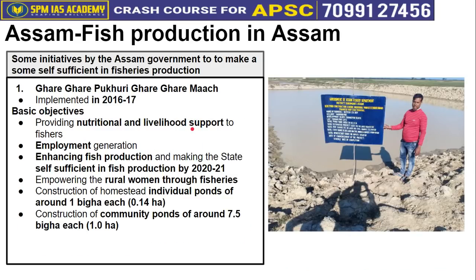Now let's look at some initiatives taken by the Government of Assam to make Assam self-sufficient in fishery production. One important scheme in this direction is 'Ghare Ghare Pukhuri, Ghare Ghare Mach' — meaning every household should have a pond and every household should produce fish. This scheme started in 2016-17, with the purpose of providing nutritional and livelihood support. When fish is available at home, nutritional security is ensured, livelihood and employment are generated, and rural women's employment and empowerment are also promoted. The target is that each household builds an individual pond of at least 1 bigha, or a community pond of 7.5 bigha at the village level.